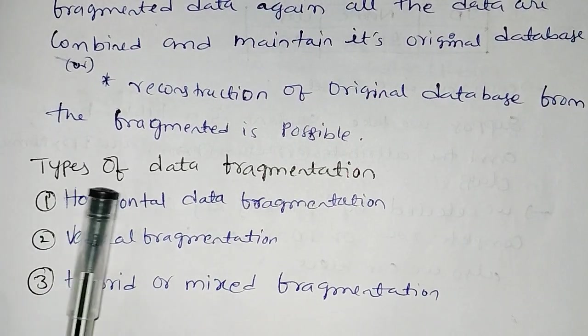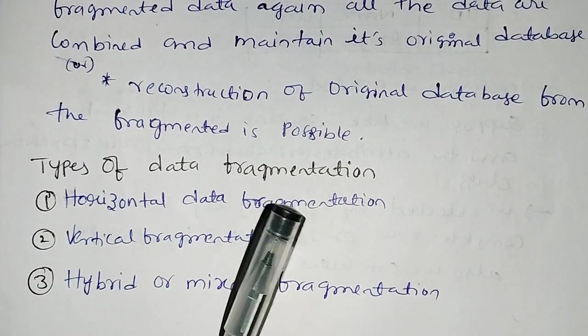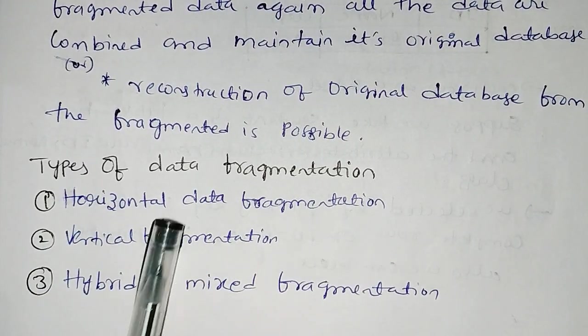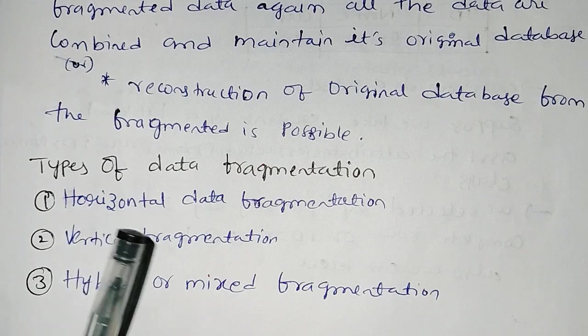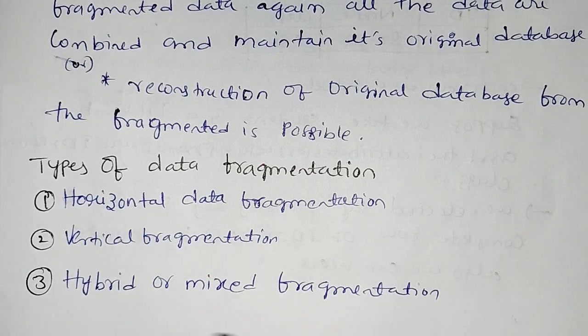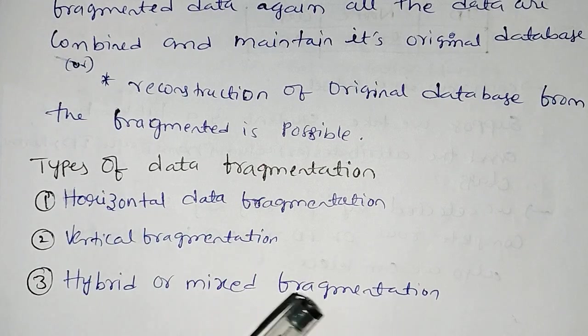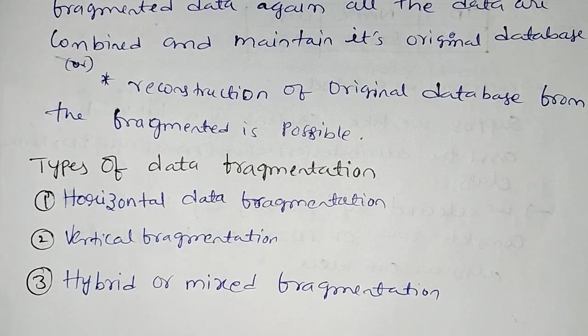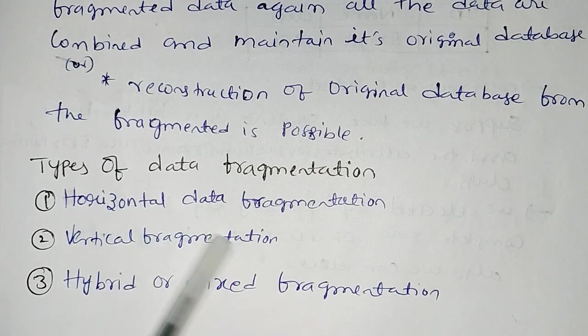Types of data fragmentation are: horizontal data fragmentation, vertical fragmentation, and hybrid or mixed fragmentation. There are three types of fragmentation.